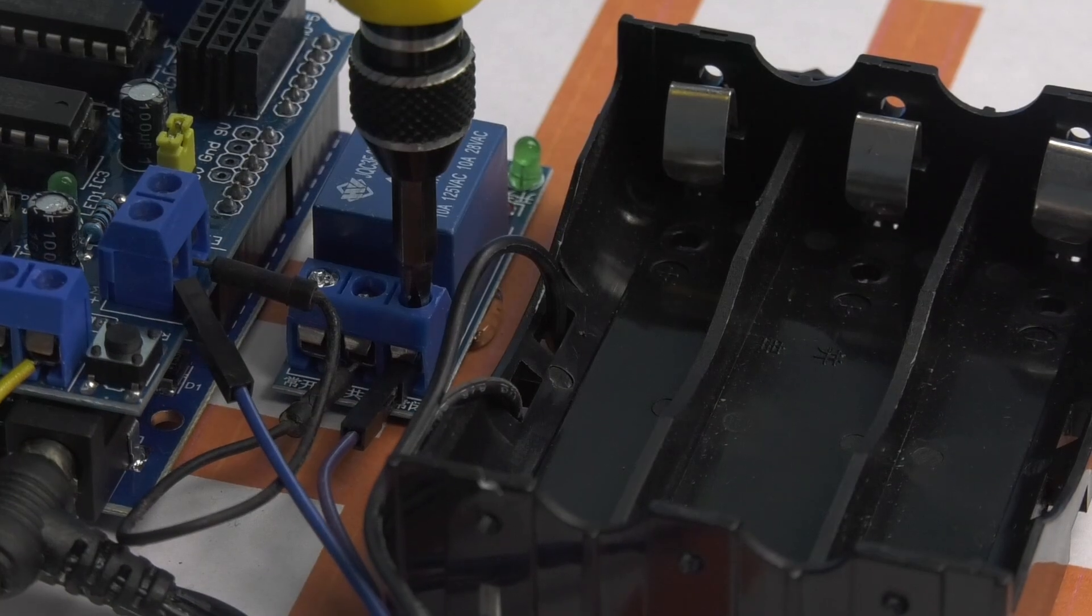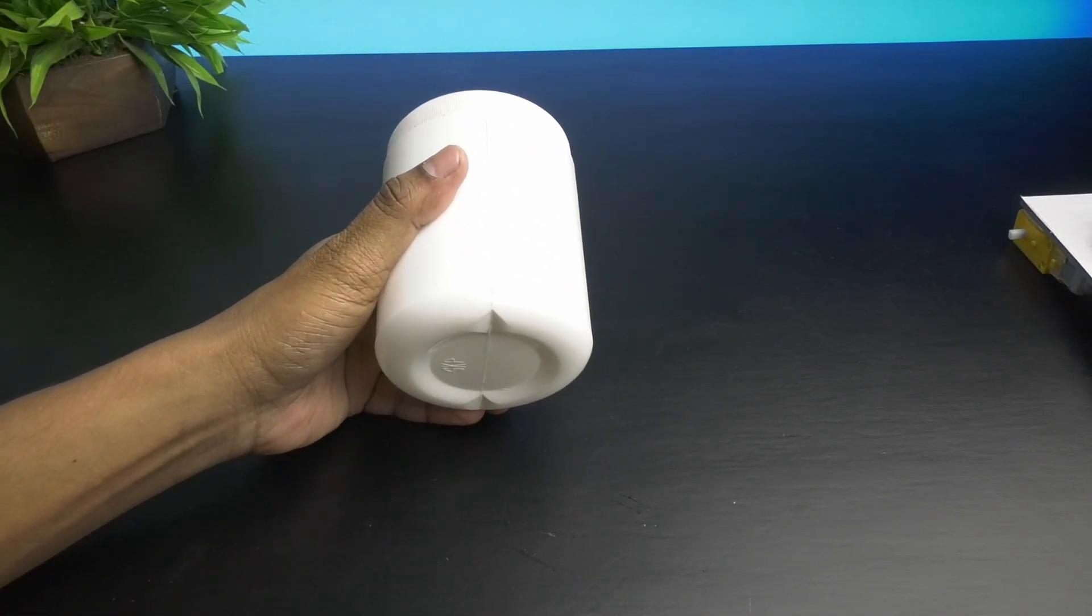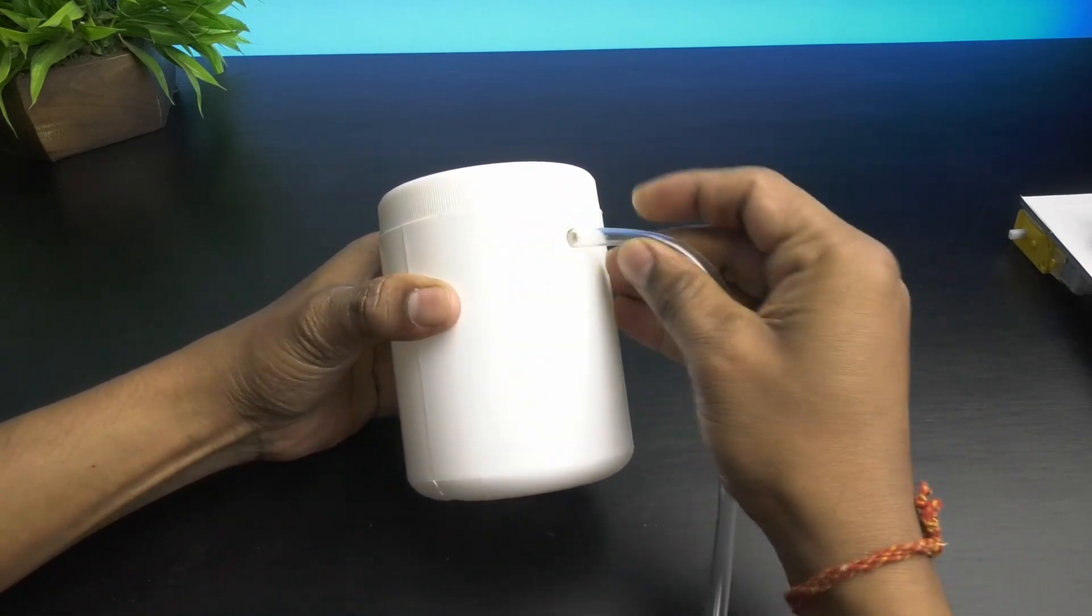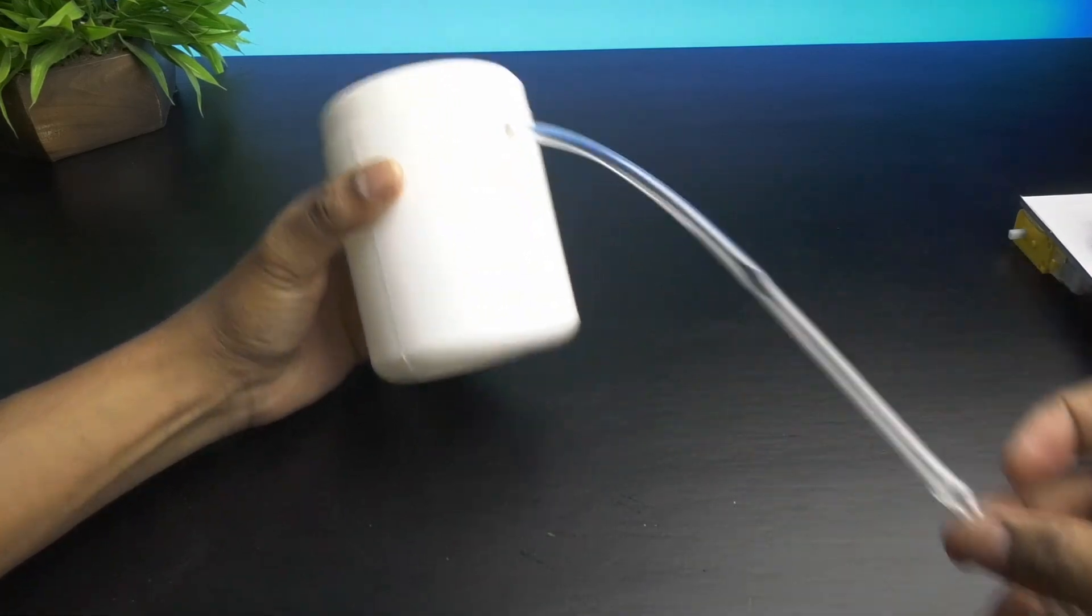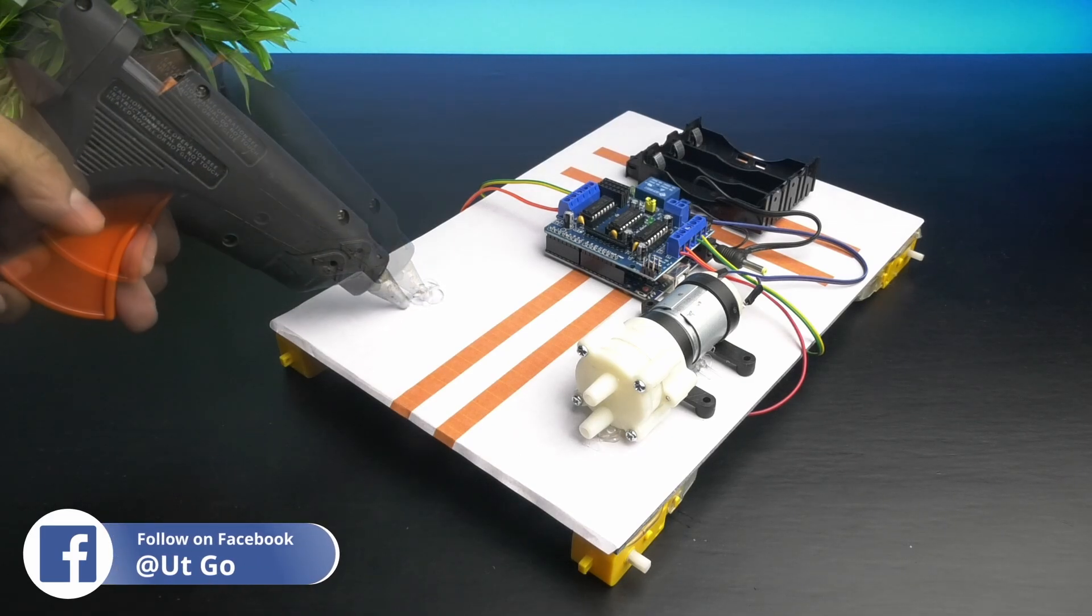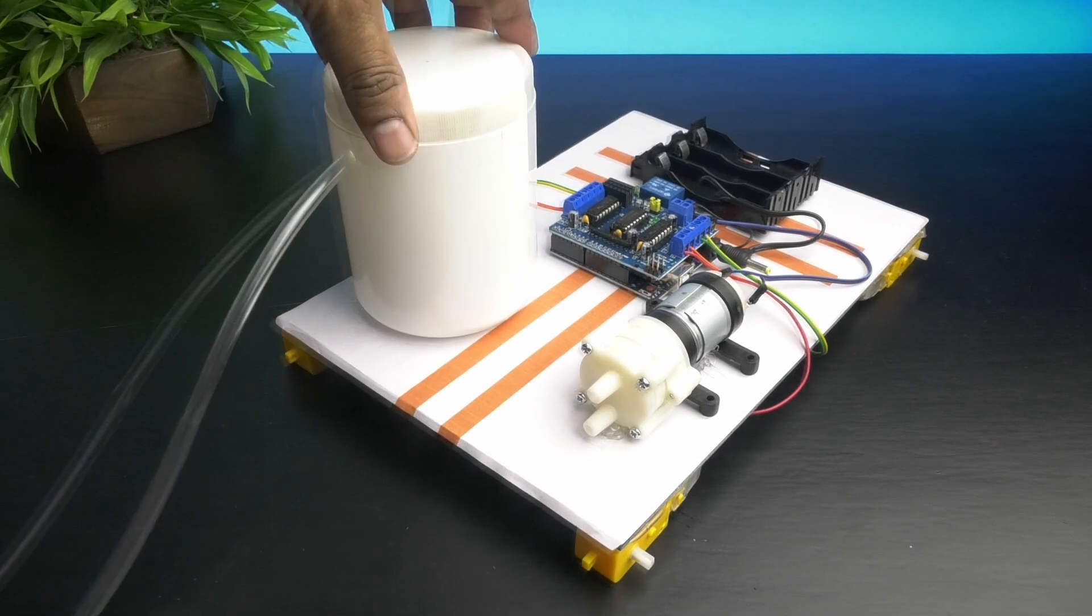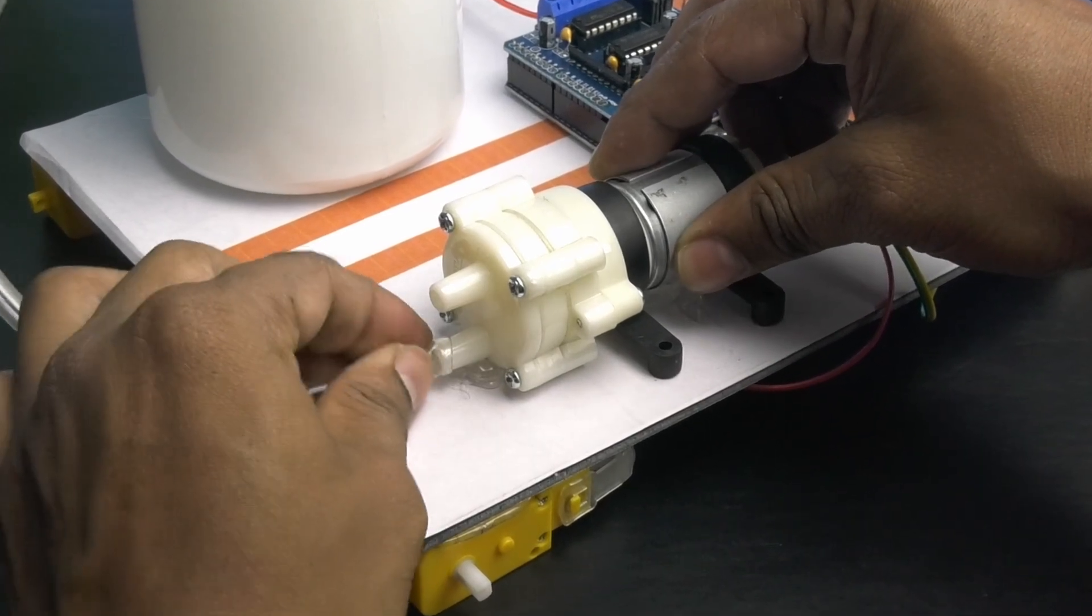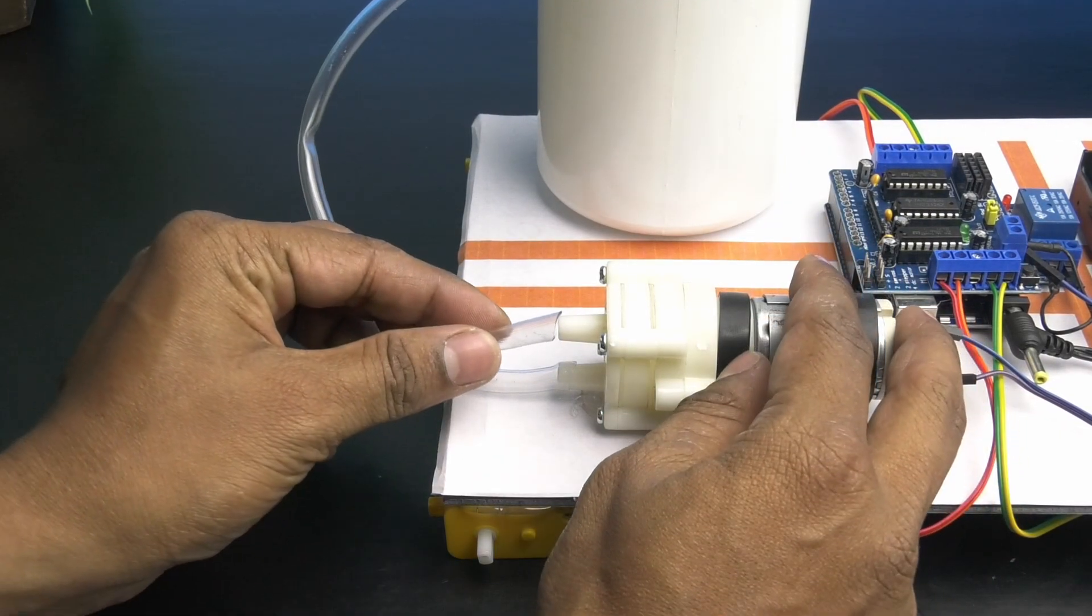Next, take a container to store water and make a hole in it for the water pipe. Then insert the water pipe through the hole and then connect the other end to the inlet of the pump. Then take one more pipe and connect it to the outlet of the pump.